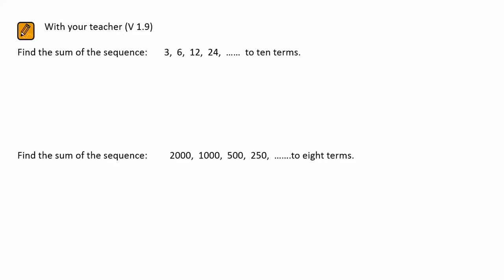In V1.9 we're looking at finding the sum of geometric sequences or series. First thing we've got to recognize is the first term which is A. Very quickly you'll see that the common ratio, 6 divided by 3, is 2.